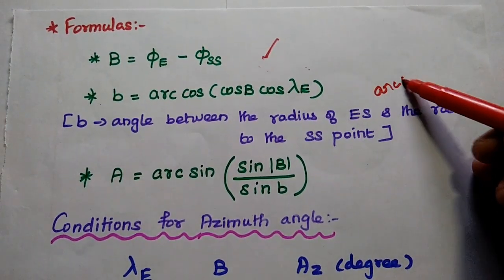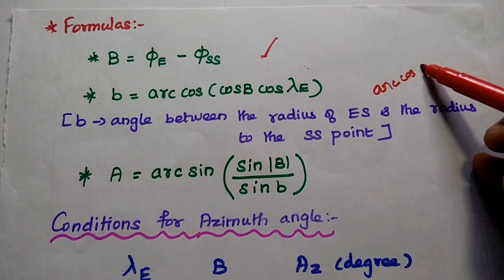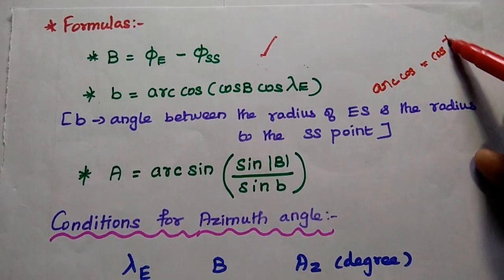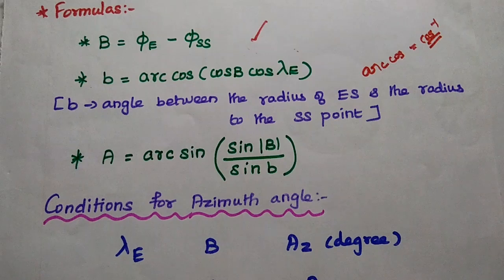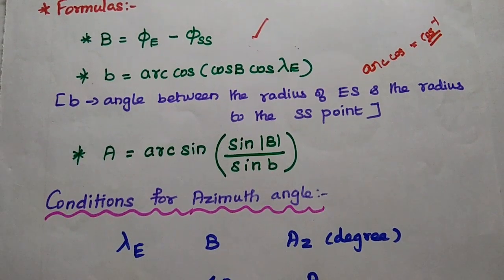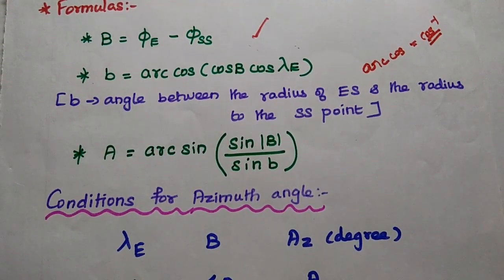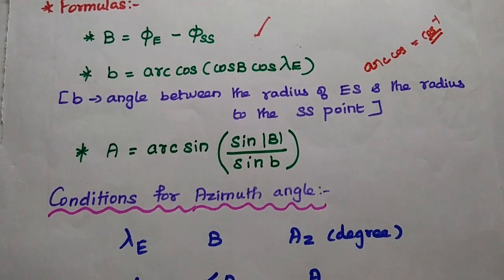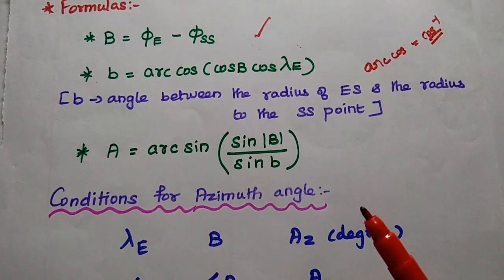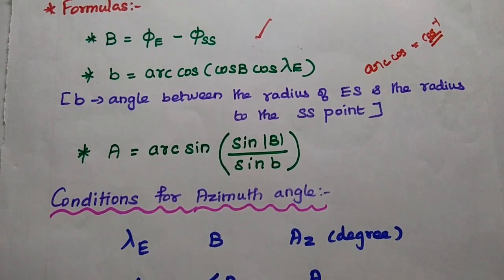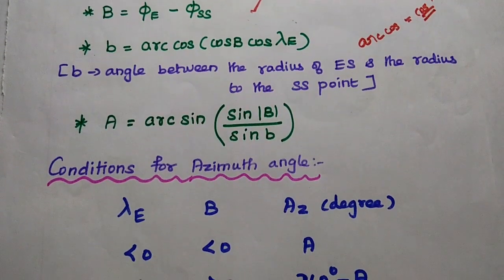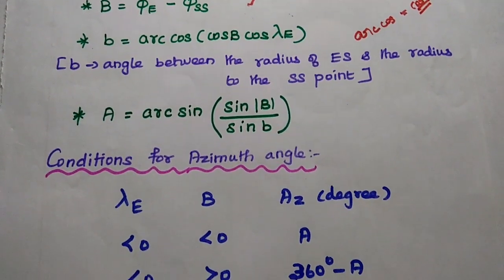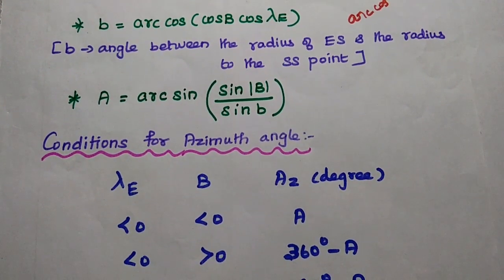Here 'arccos' means inverse cosine. Small b represents the angle between the radius to the earth station and the radius to the subsatellite point. By using capital B and small b, we can find out the value of capital A, which is the intermediate angle used to calculate the azimuth angle.